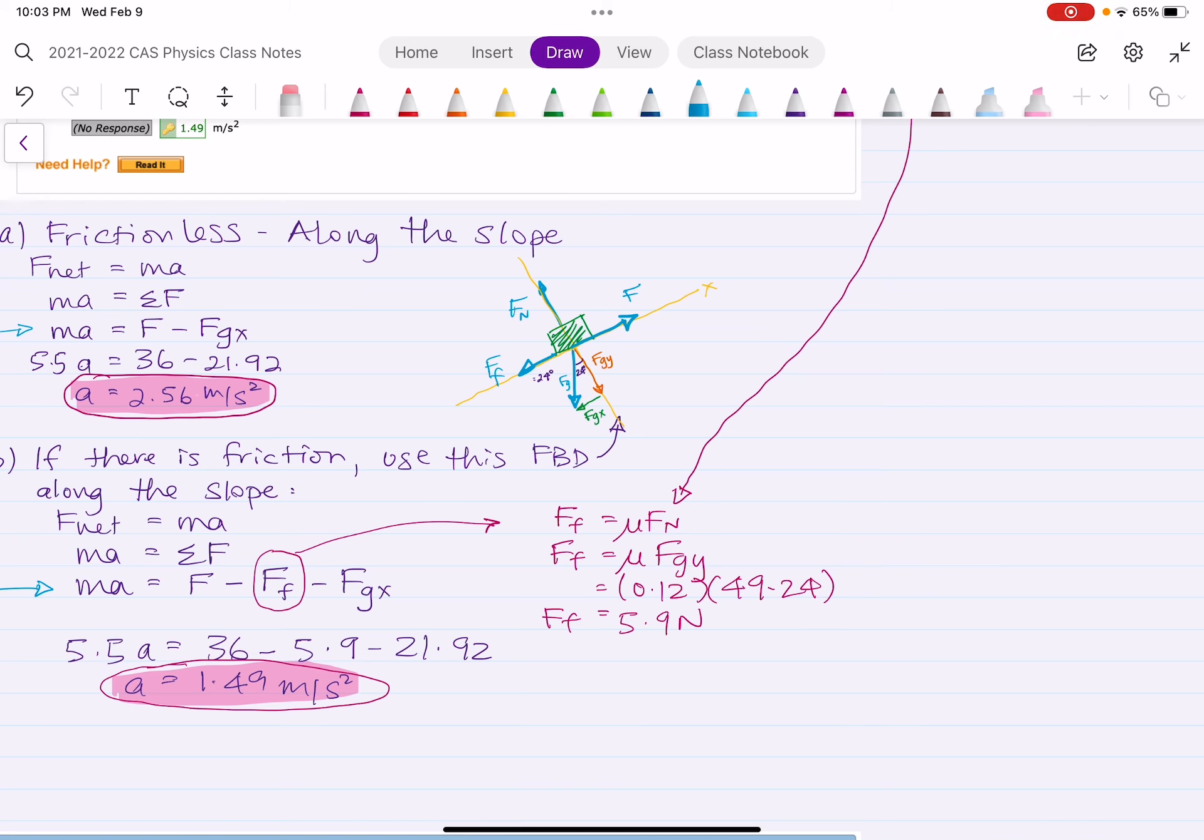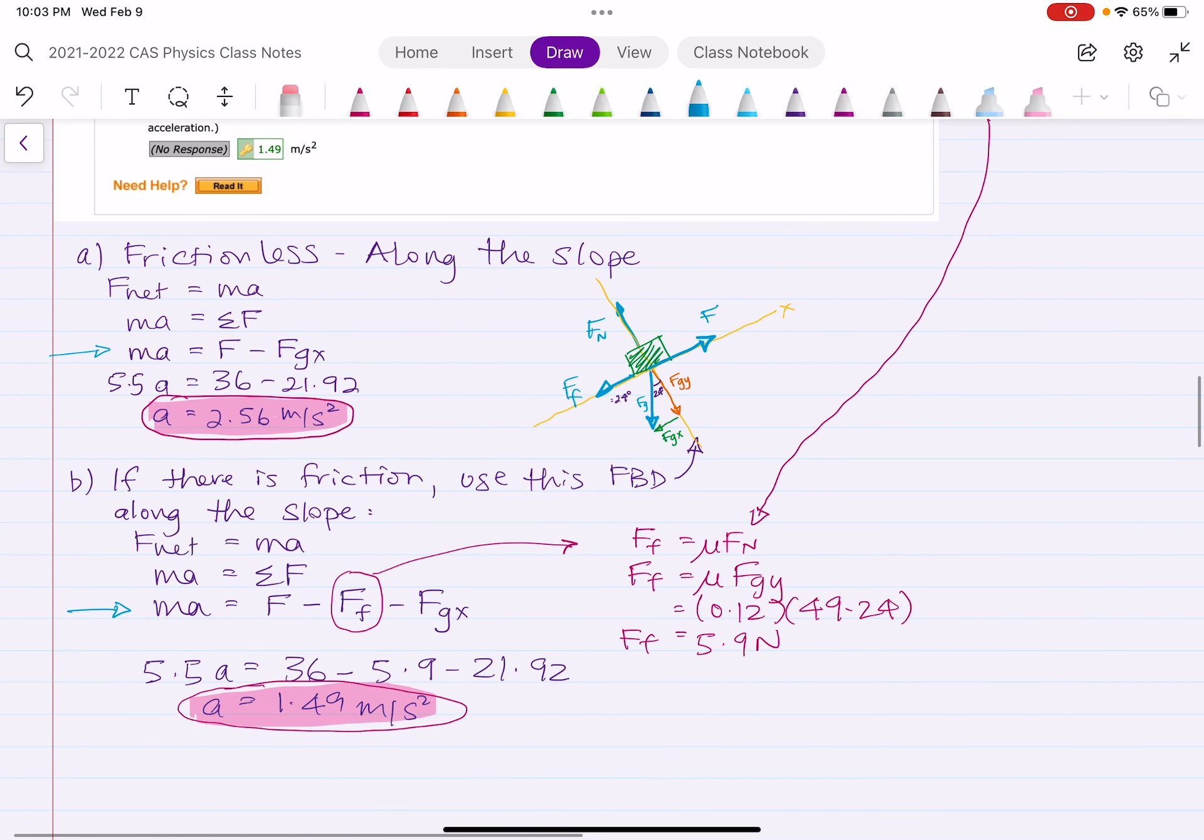Now, FF goes back into this original equation. And we know everything. We know the force is 36. We now know friction is 5.9. And we know that the X component of gravity, we already calculated that. So dividing all that by 5.5 gives you the new acceleration of 1.49.